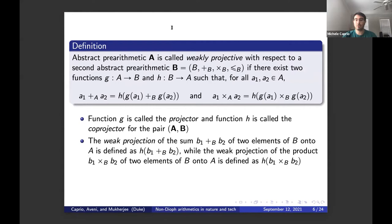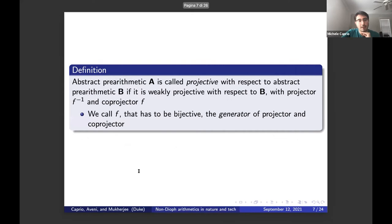We say that an abstract pre-arithmetic is weakly projective with respect to another one if there exists two functions, which we call G and H, the first one going from A to B and the second one from B to A, such that for every two elements of A we have these relations. Basically, we are summing two elements of B, G of A1 and G of A2, and then we are computing H on the result of the sum and likewise for the product. The weak projection of the sum of two elements of B onto A is defined as H of B1 plus B2.